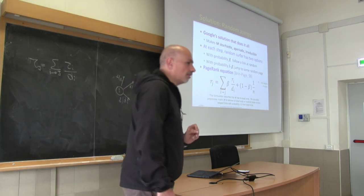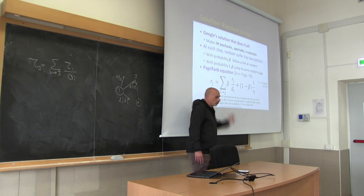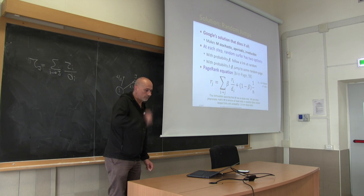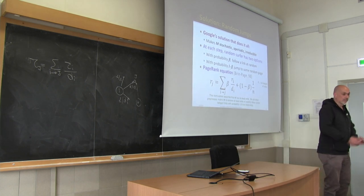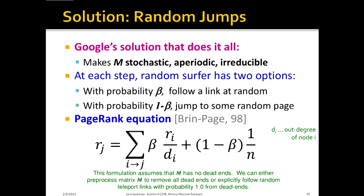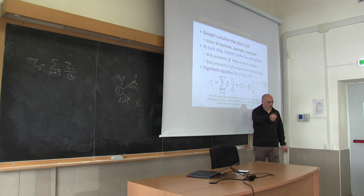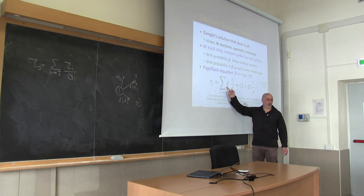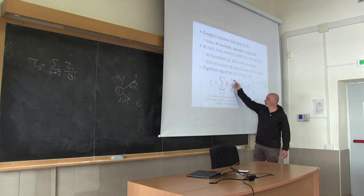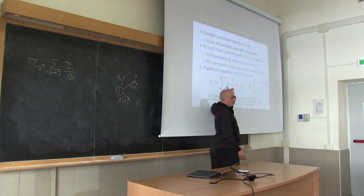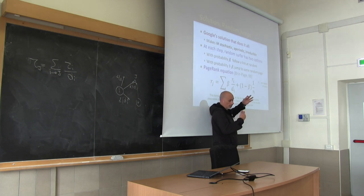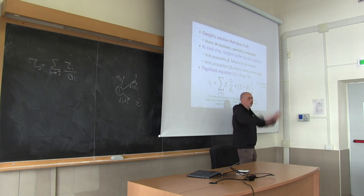We are going to modify this random walk. So beta — normally called alpha, the teleporting probability or damping factor — works as follows: toss a coin that gives heads with probability beta. If heads, with probability beta I just follow the links. This probability is relatively large: 0.8, 0.85, or 0.9. With the residual probability I jump uniformly at random.